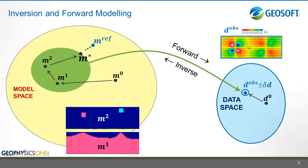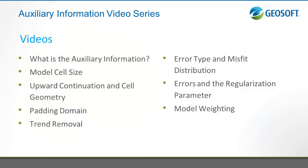The suite of results from the inversion of this given data is entirely controlled by the auxiliary parameters. User inputs such as cell discretization, padding, and misfit distribution have profound effects on the resultant model. The investigation of any inversion model suite must take into account the application of these parameters. Moreover, the recreation of any inversion result depends on the choice of auxiliary inputs.